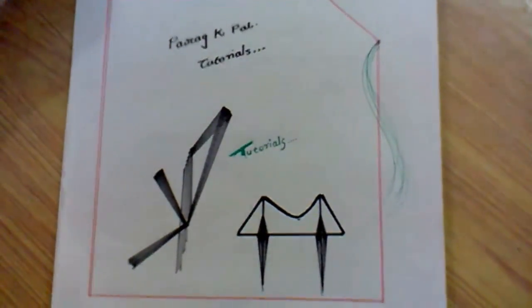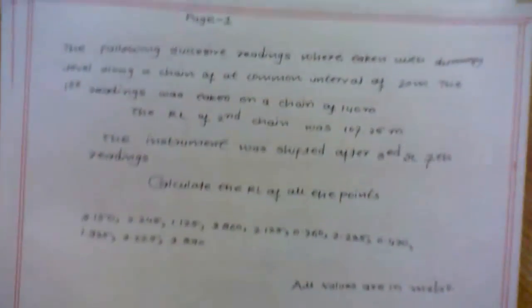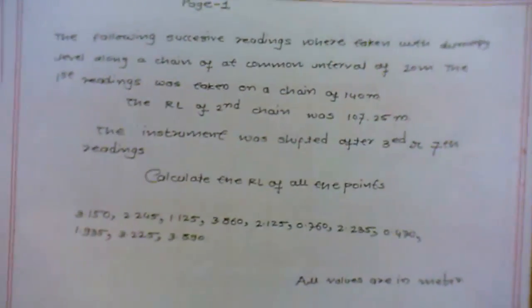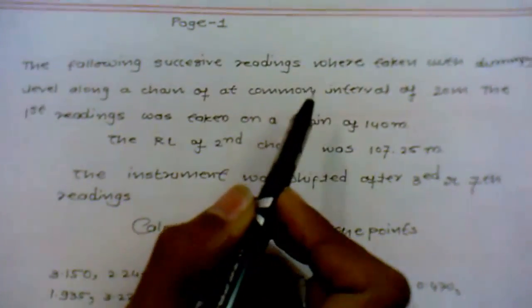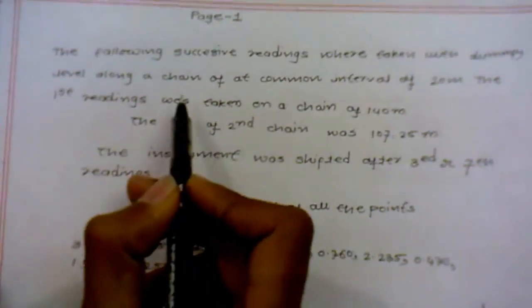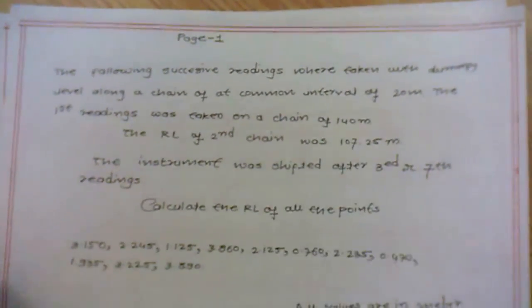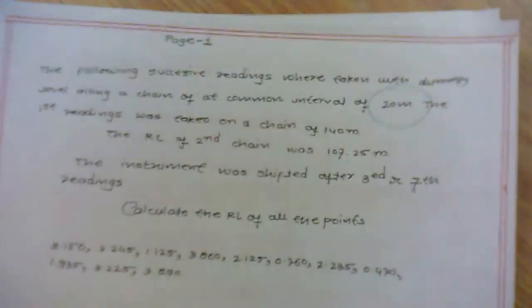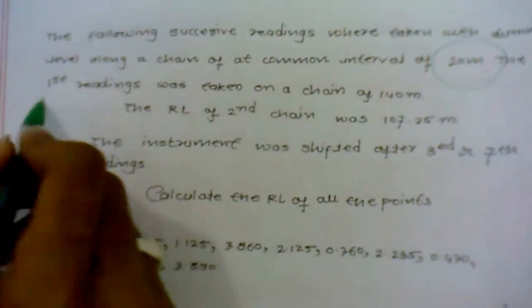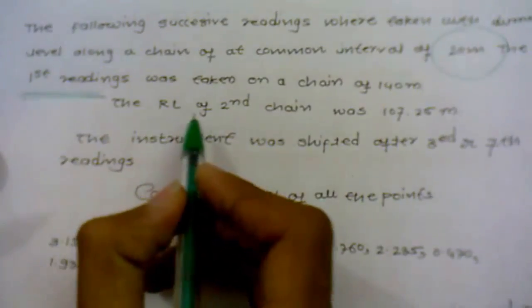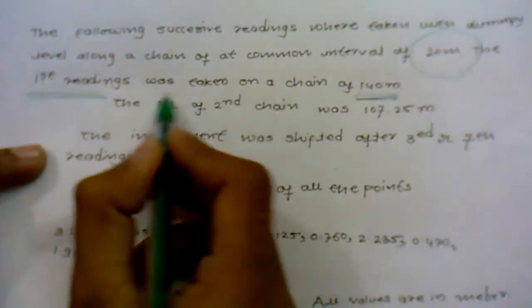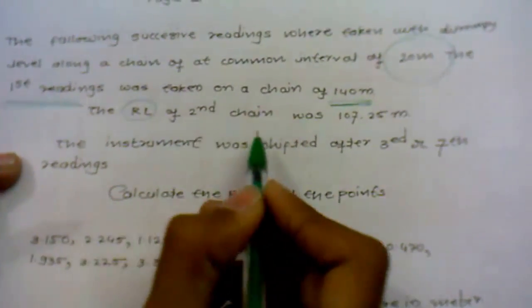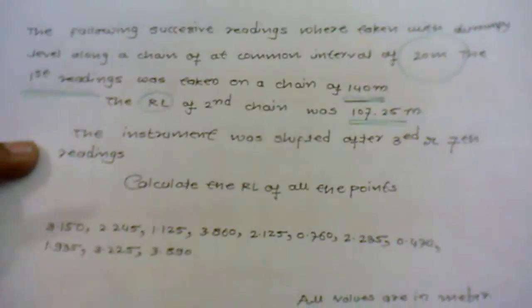Welcome to Parakke Parak Tutorials. This numerical deals with the rise and fall method. Here is a numerical: The following successive readings were taken with a dumping level along a chain at a common interval of 20 meters. The first reading was taken at chain of 140 meters.